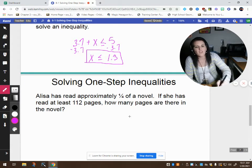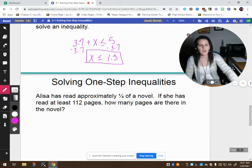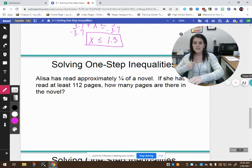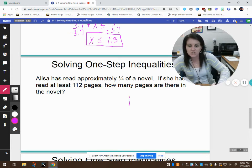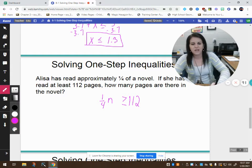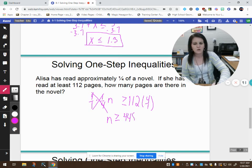Alyssa has read approximately a fourth of her novel. She has read at least 112 pages. How many pages are there in the novel? I had an interruption, sorry. Anyway, we're looking at she's read at least 112 pages. So she may have read more than 112 or she could have read exactly 112, but we know that a fourth of the number of pages – a fourth of the number of pages of means multiply. One-fourth of the number of pages is at least 112. So remember, how do I get rid of a fraction? I multiply by its reciprocal. So I want to multiply both sides by 4 over 1 because that becomes 4 over 4. 4 over 4 is 1. 1 times n is n.